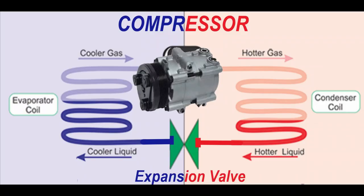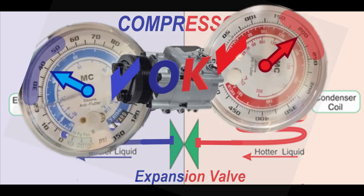Thank you so very much for tuning in. For those of you that are new to automotive air conditioning, here are some valuable slides. Your high side should be about 200 PSI and your low side should be about 40 PSI.